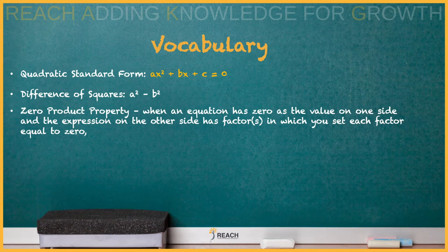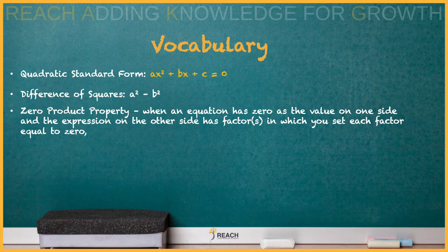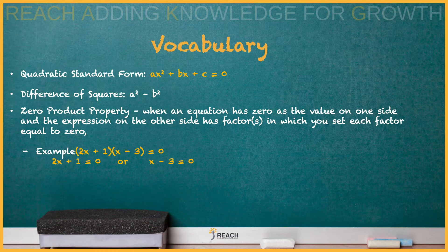Recall the difference of squares, a² - b², and last, the zero product property. When the equation has zero as the value on one side and the expression on the other side has factors, you can set each factor equal to zero and solve. Check out the example.